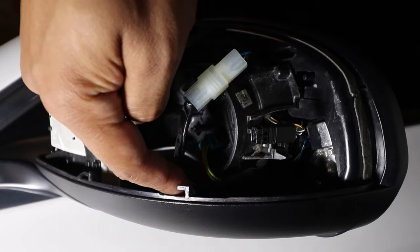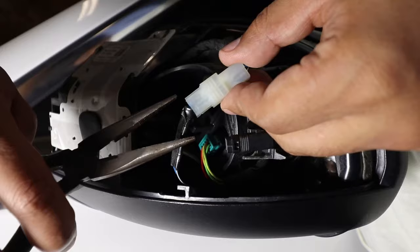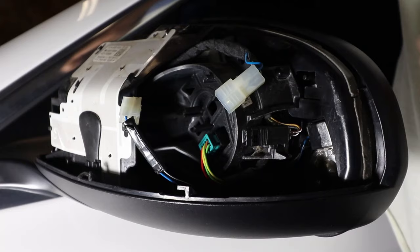Now I'm going to disconnect this connection here which runs to the light, the light that shines through the bottom of the side mirror. I'm just going to grab some needle nose pliers, pinch on the sides and pull it right off.